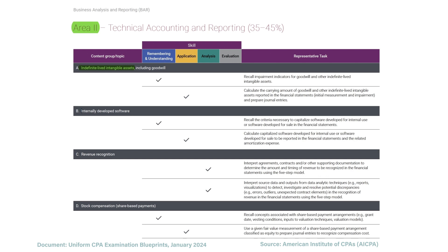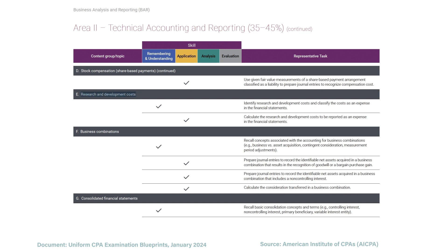Then we need to know how we account for internally developed software — when we spend money developing software, how do we capitalize it and how do we amortize it. Next, we need to know about revenue recognition: how to interpret agreements and contracts using the five-step model. Then we have stock compensation — when paid stock options, how do we value them, account for them, and what are the journal entries? Next, we have research and development costs — what should we expense and what should we capitalize?